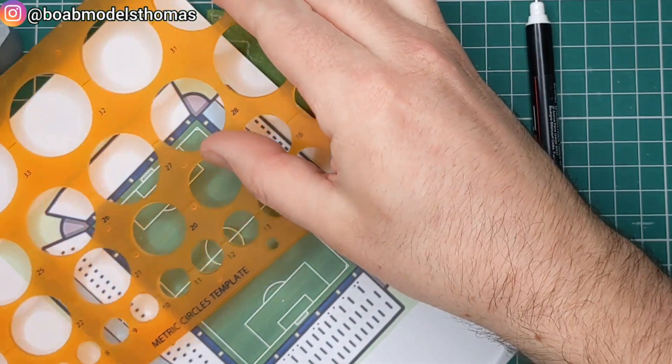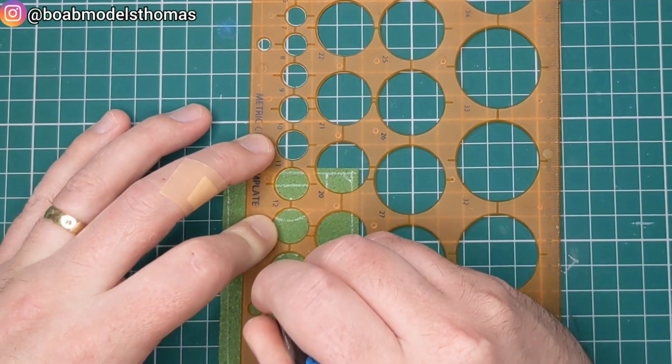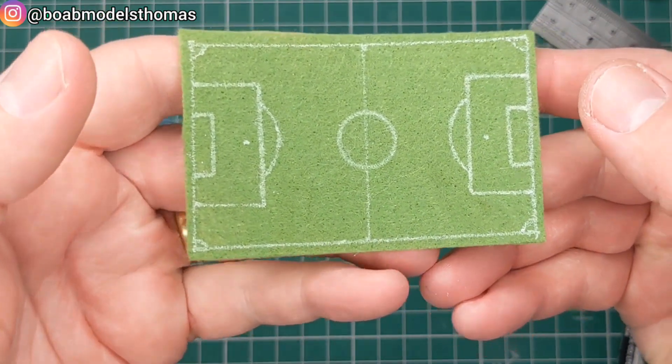And then I used this circle template here to make sure that I got nice, neat curves on the centre circle. Pretty happy with that. The Ds on the edge of the box are a little big.